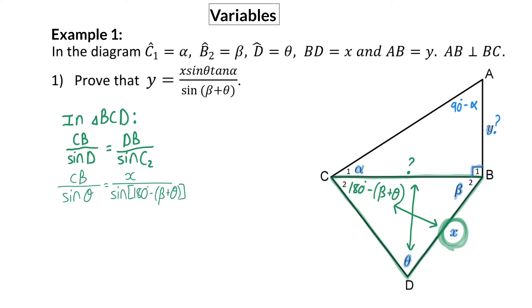we can substitute in everything that we have, and even though this might look confusing, all the basic concepts stay the same with variables. We want to get CB alone on the left, and that is why we multiply with sin theta on the right.